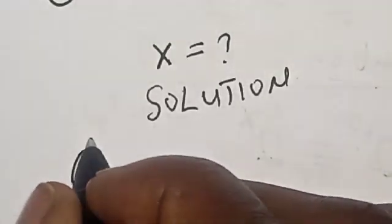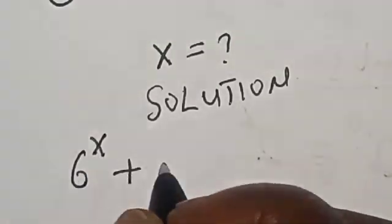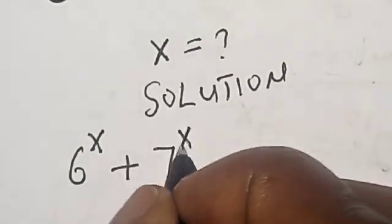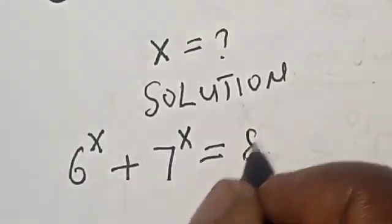Solution: 6 raised to power x plus 7 raised to power x is equal to 85.